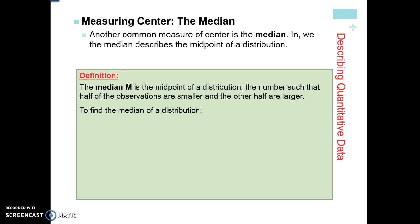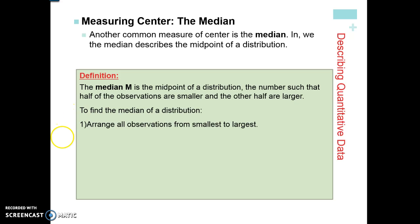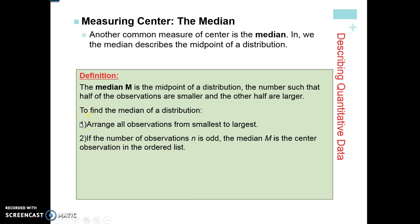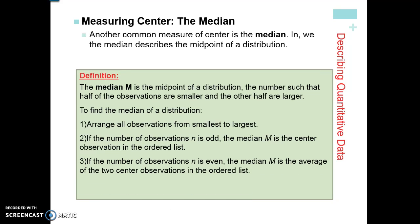Another measure of center is the median, which is different from the mean in that the median is the midpoint of a distribution — it literally breaks the data in half. It's not averaging the data; it's just telling us where the middle of the distribution is — a position within the distribution. To find the median, arrange all observations from smallest to largest. If the number of observations is odd, the median is the center observation. If even, the median is the average of the two center observations — add them together and divide by two.